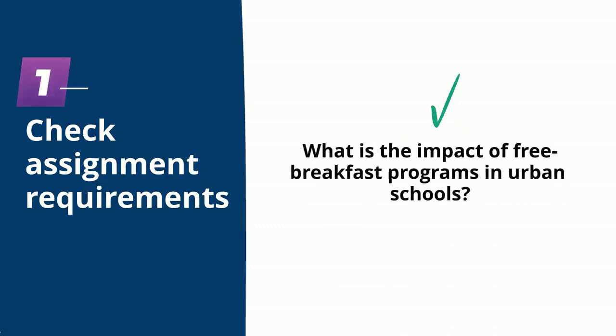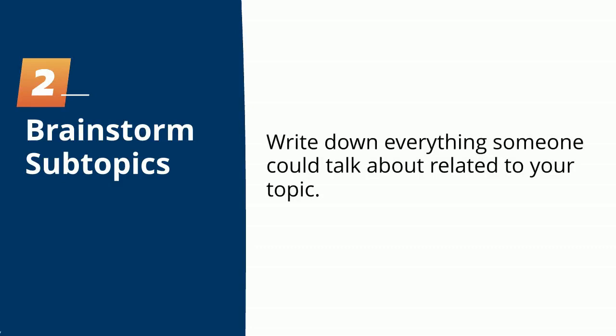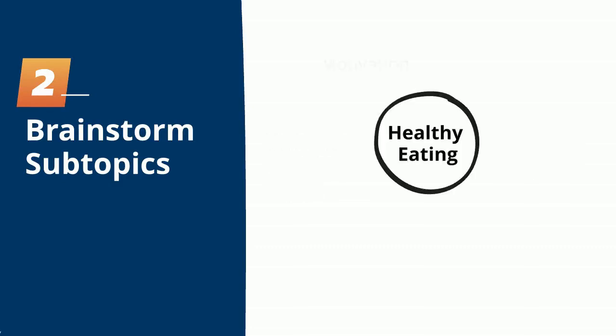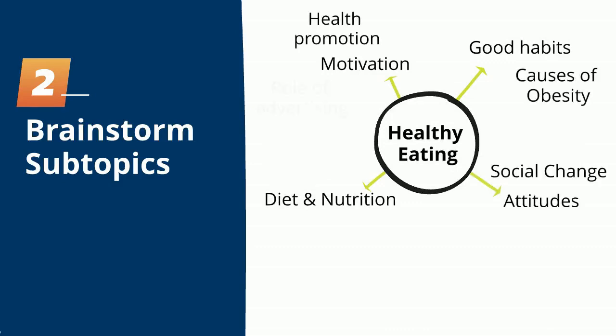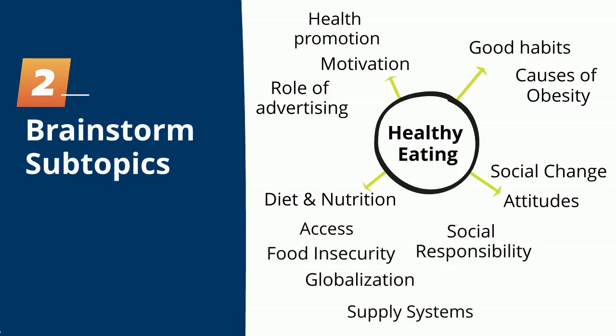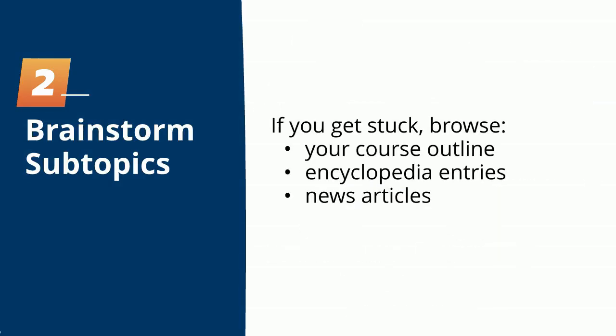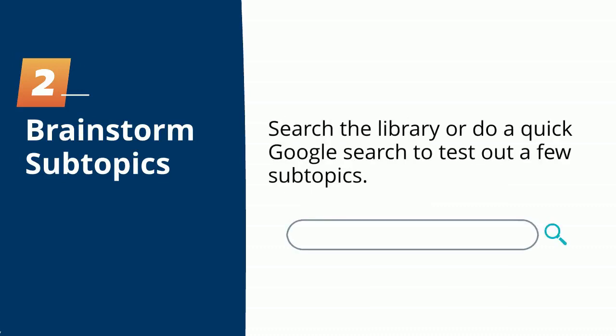Next, brainstorm a list of subtopics. Write down everything someone could talk about related to healthy eating — motivation, developing good habits, diet and nutrition, attitudes towards healthy foods, and the list goes on. Brainstorming can spark new connections and help you dig deeper into the topic to discover more interesting subtopics than you first thought. If you get stuck, browse your course outline or read a few encyclopedia entries and news articles for inspiration. Once you have a long list, identify one or two subtopics that look interesting to you. Search the library or do a quick Google search to test out a few subtopics to make sure there are lots of interesting articles about your topic.